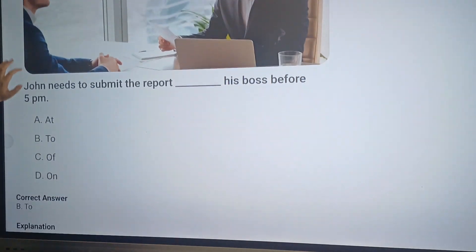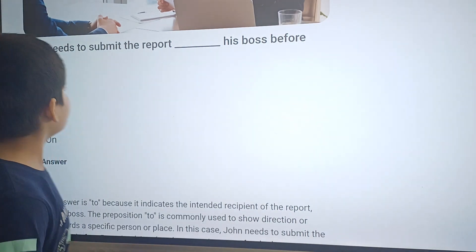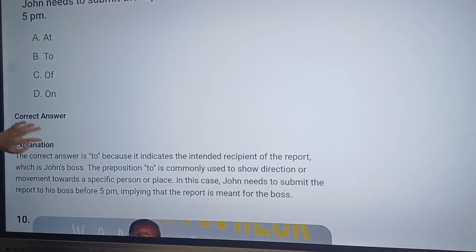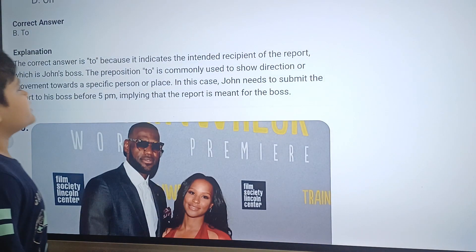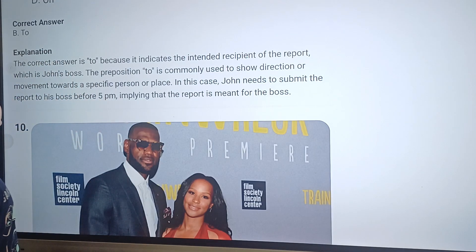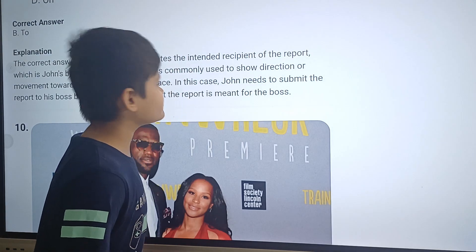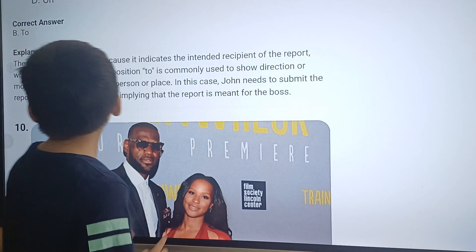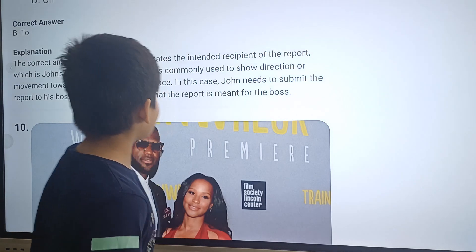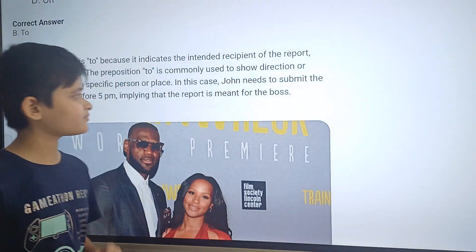Okay, question nine. Jonathan needs to submit the report dash his boss before 5 p.m. The answer will be B, option B. Here is why: The correct answer is to because it indicates the intended recipient of the report, which is John's boss. The preposition to is commonly used to show direction or movement towards a specific person or place. In this case, John needs to submit the report to his boss before 5 p.m., implying that the report is meant for the boss.